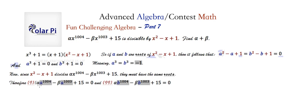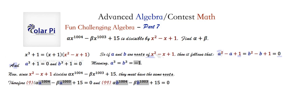That means that alpha times a to the 1004 minus beta times a to the 1003 plus 15 needs to equal 0. And what's true about a has to also be true about b, because a and b are roots of the quadratic, and since the quadratic divides this 1004-degree polynomial, the roots of the quadratic must also be roots of the 1004-degree polynomial.